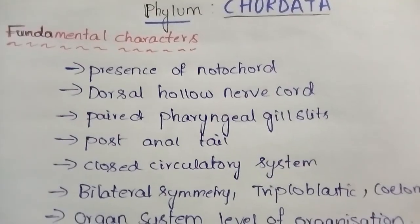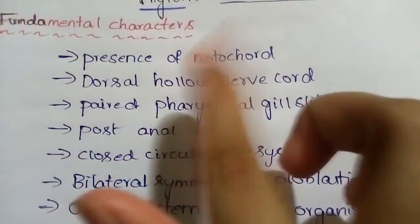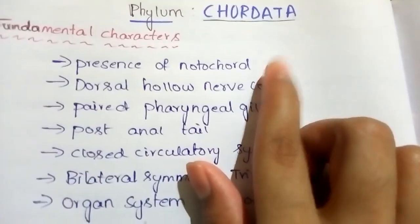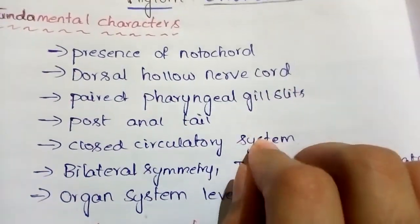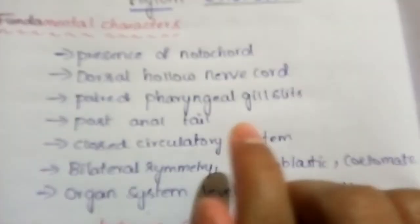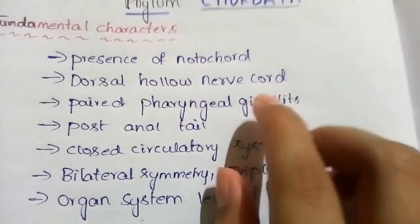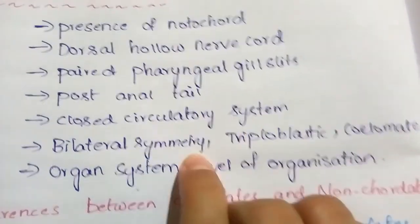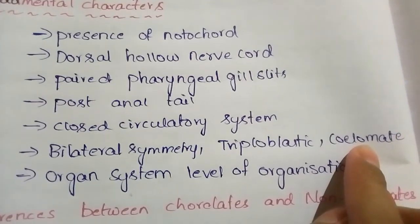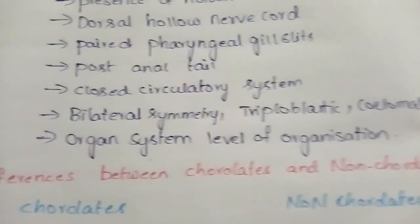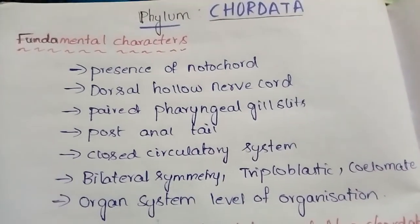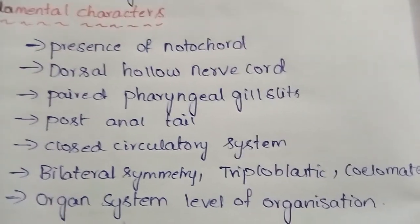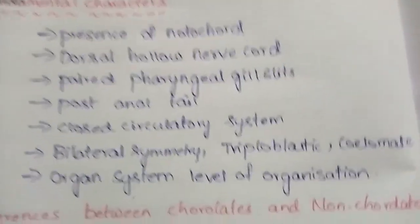In Phylum Chordata, whatever organisms are included, they will have the basic fundamental characters. All chordates have these fundamental characters: presence of notochord, dorsal hollow nerve cord, paired pharyngeal gill slits, post-anal tail, closed circulatory system, bilateral symmetry, triploblastic, coelomates, and organ system level of organization.